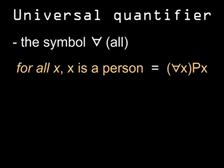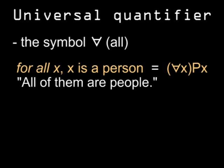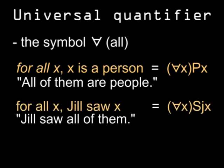First, here's the quantifier, all. Remember when we used predicates with variables, we ended up with sentences like, x is a person. But this doesn't tell us anything about that x. Let's use x as a quantifier. For any x, x is a person. Let's try that with the sentence, x saw y.